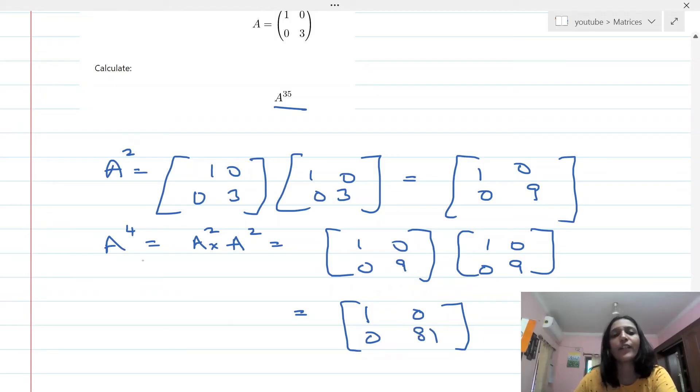And 0 again, and then 0, and then 0 and 9 into 9 is 81. So one thing you observe is that whatever the power of A is, that becomes the power of 3 over here. So if this is to the power 4, this is becoming 81, which is 3 to the power 4.